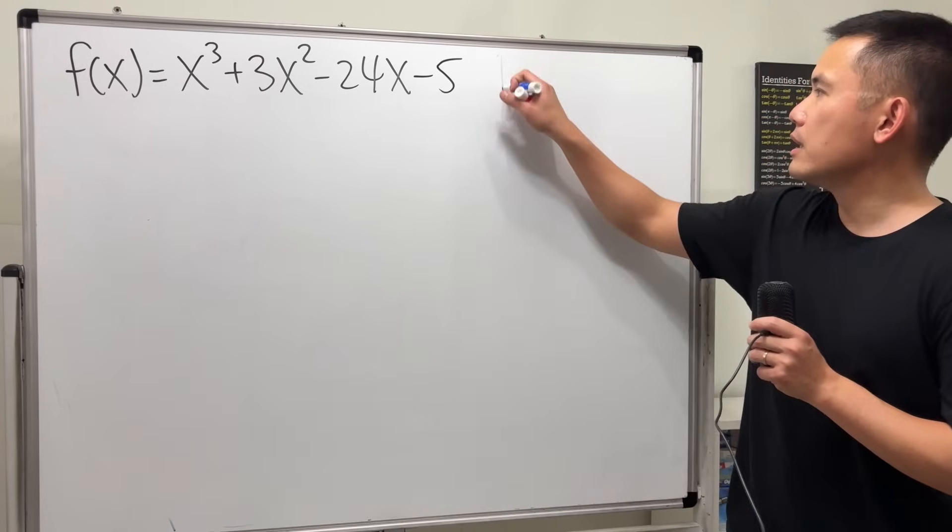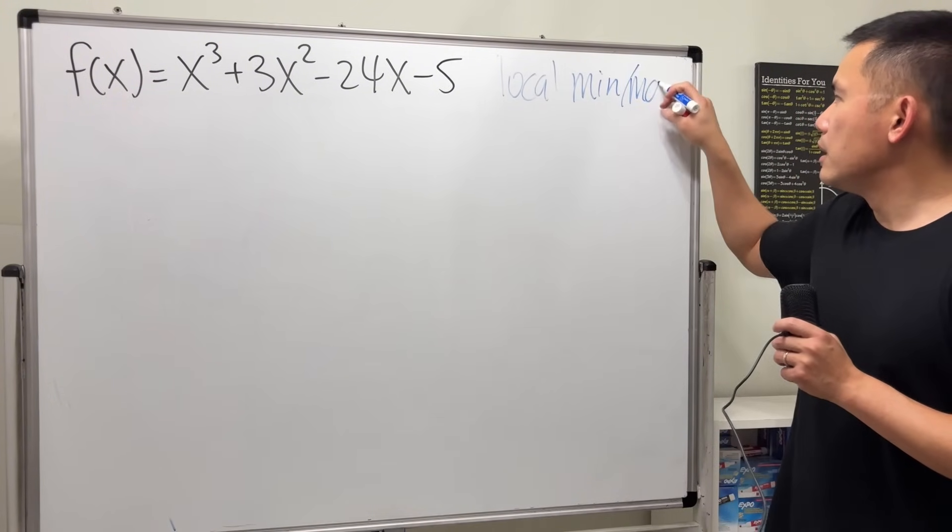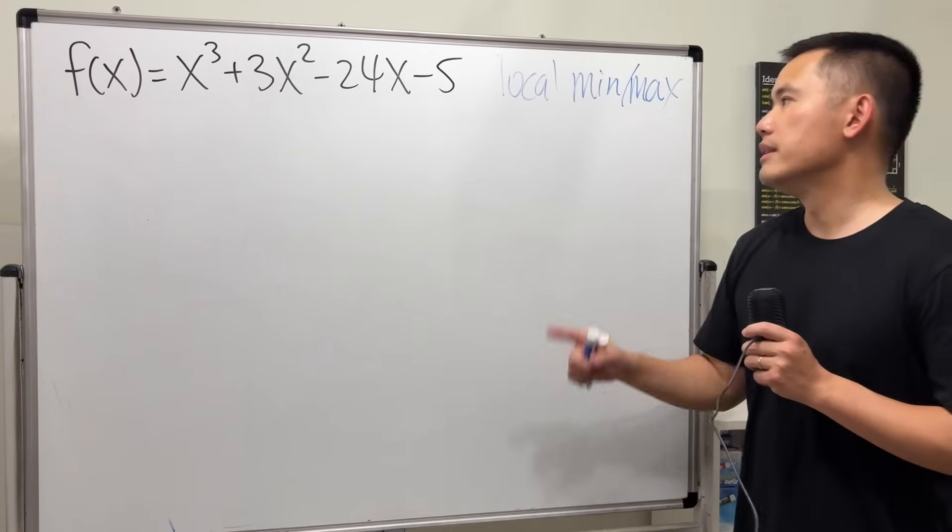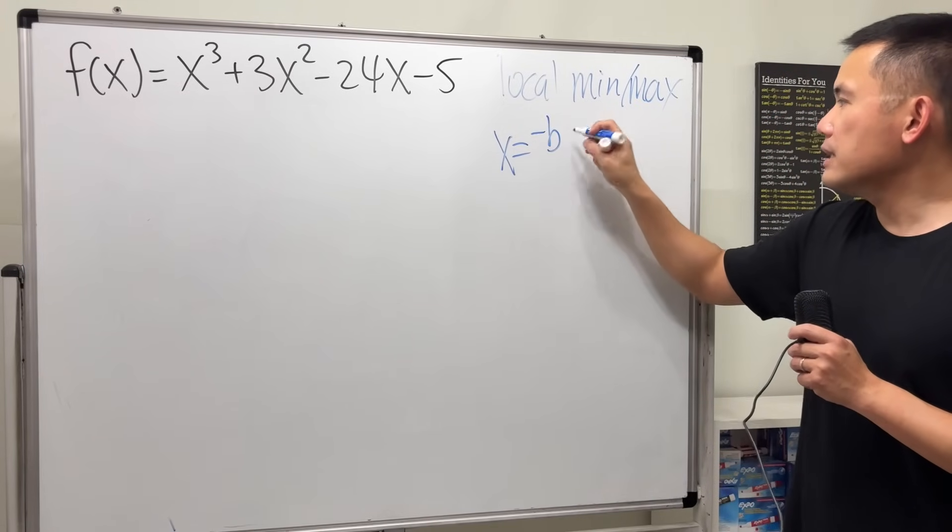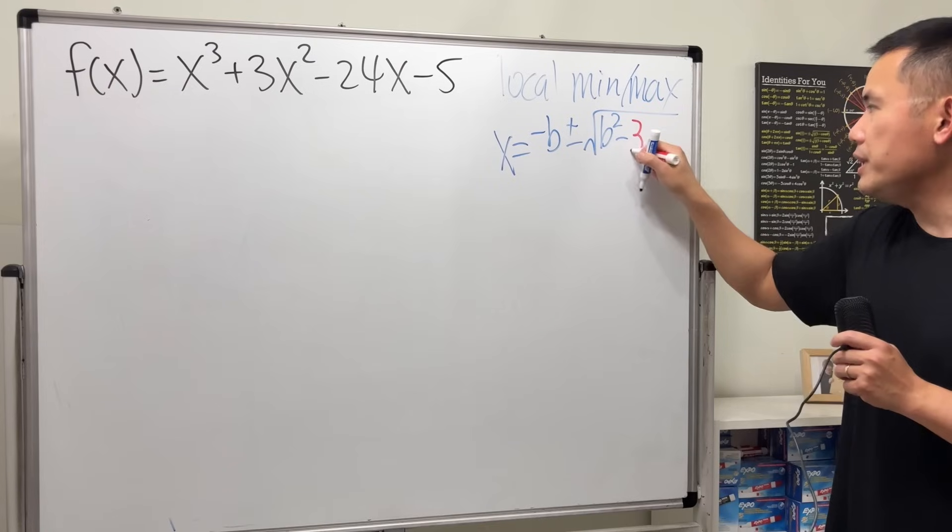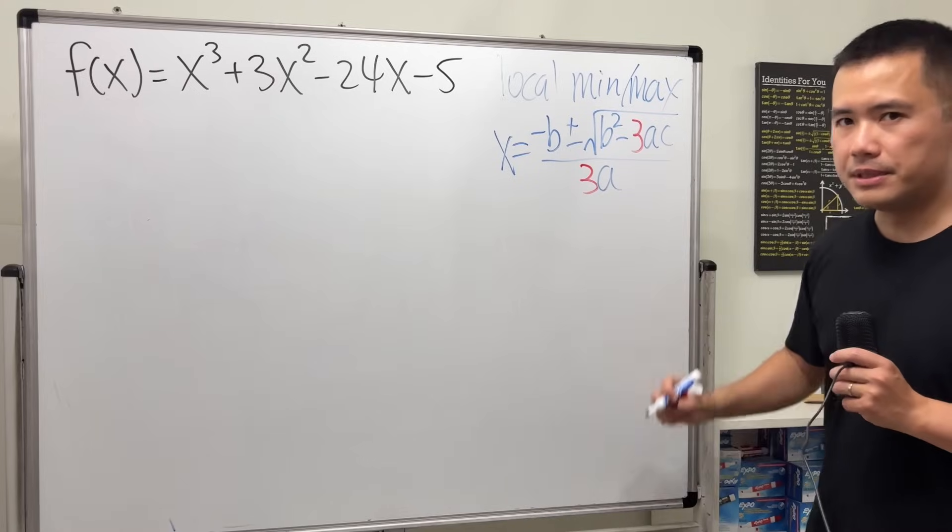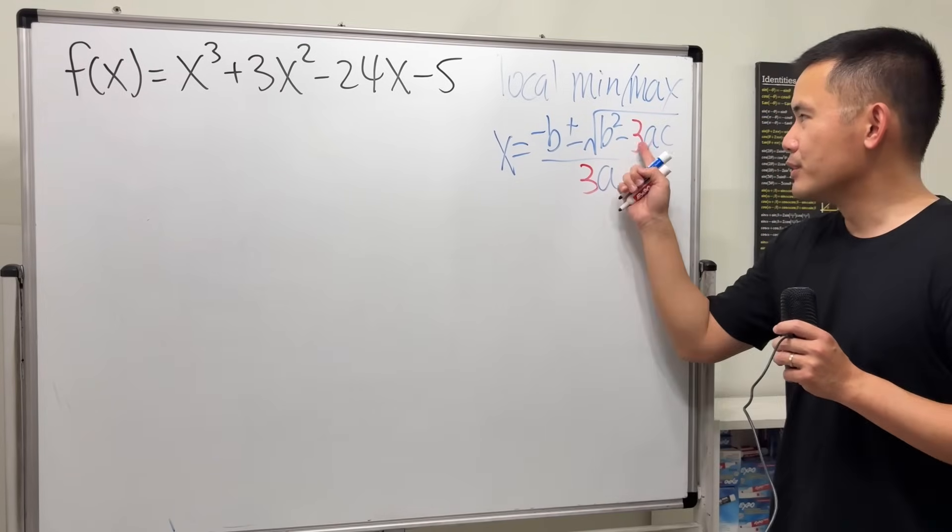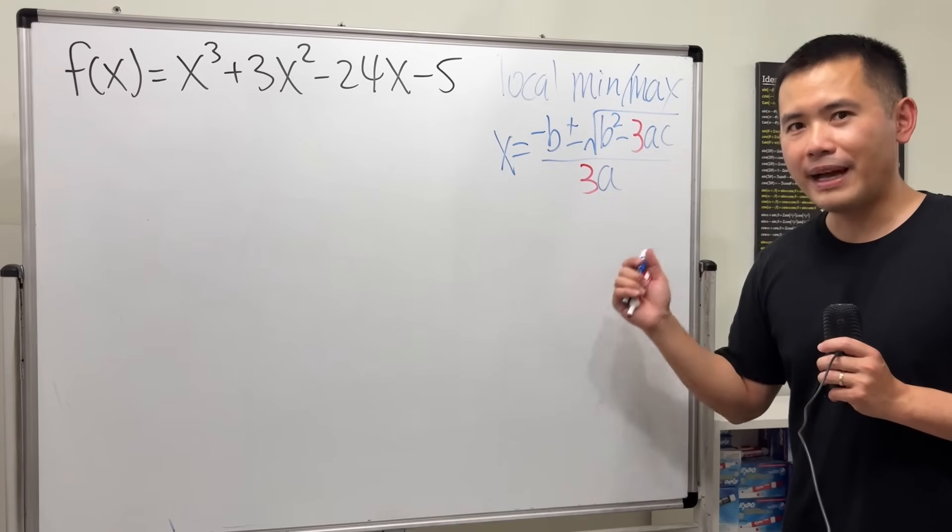And that is the local min/max, if a cubic does have it, then it's going to be happening at x equals negative b plus or minus square root of b squared minus 3ac all over 3a. And I'm serious, three and three here. It looks like a quadratic formula but it's not.